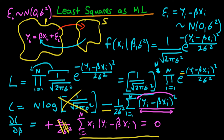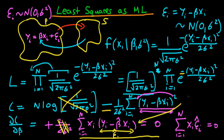This first-order condition looks very similar to what we had before in linear regression, where the condition was that the sum from i=1 to n of xi times the residual equals zero. The term in parenthesis is exactly the estimated residual, since we're using beta_hat. Working through this, it's easy to show that beta_hat_MLE = sum(xi * yi) / sum(xi²), which is identical to the least squares estimator in the case without an intercept.